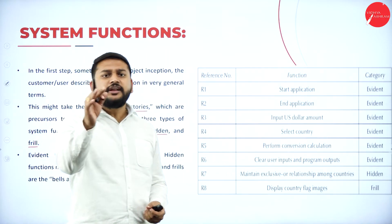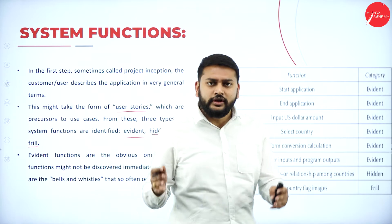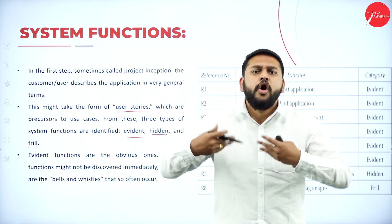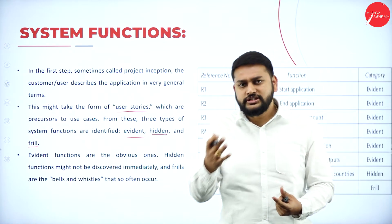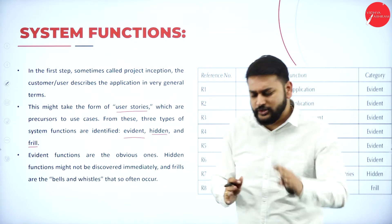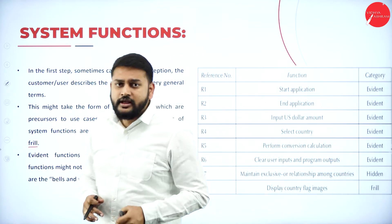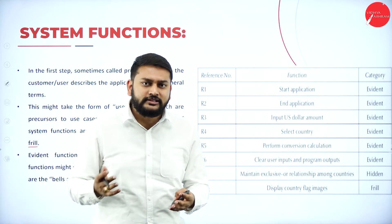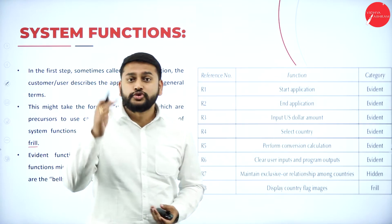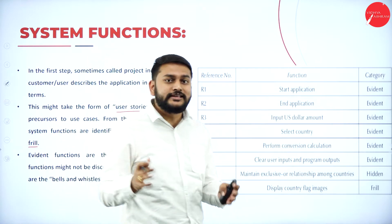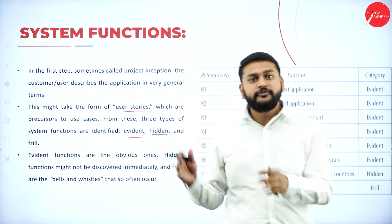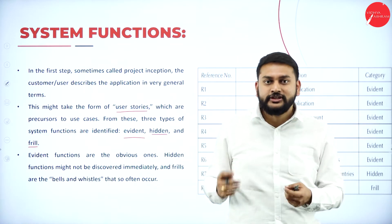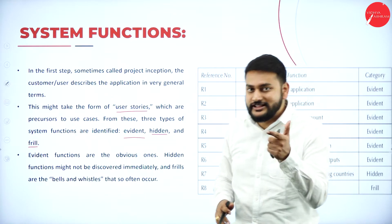Evident means the most obvious, common functionality that should be there in your system. Hidden means some functions which you cannot recognize or identify — such functions I will call hidden. And frill refers to functions which come in between, like bells or alarms — such functions I will call frills. So we have three types: evident, hidden, and frill.